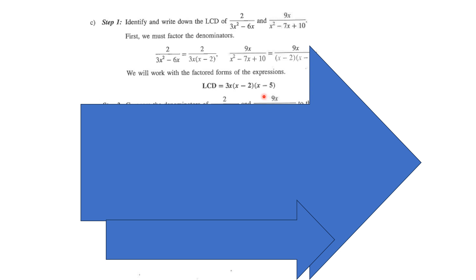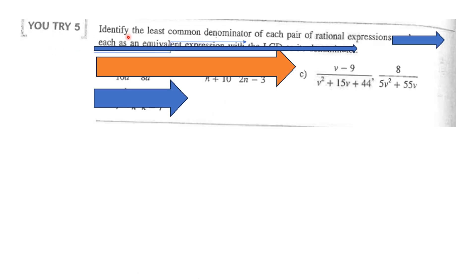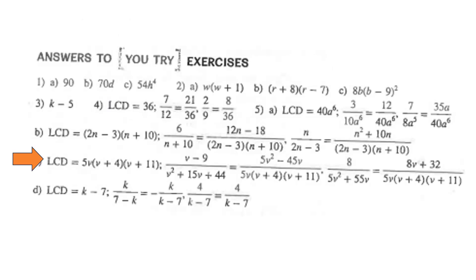Notice that x minus 2 appears in both factorizations but only to the first power, so it's included once. Here's one for you to try. Identify the least common denominator of each pair of rational expressions: v minus 9 over v squared plus 15v plus 44, and 8 over 5v squared plus 55v. Please pause the video, work the problem, and resume to see how you did. The answer is 5v times the quantity v plus 4 times the quantity v plus 11.